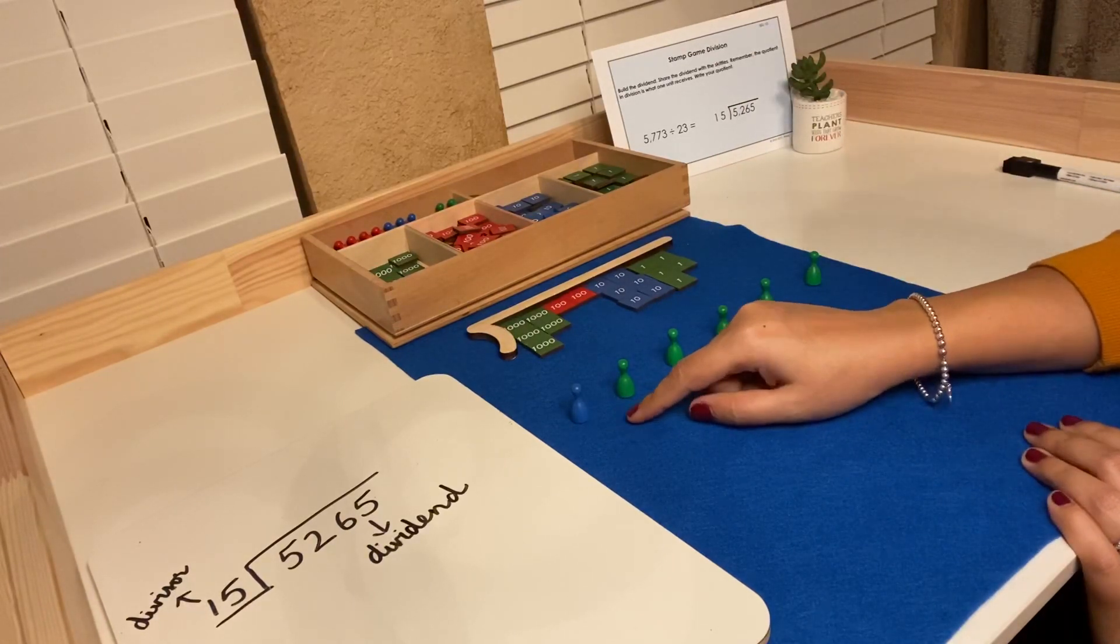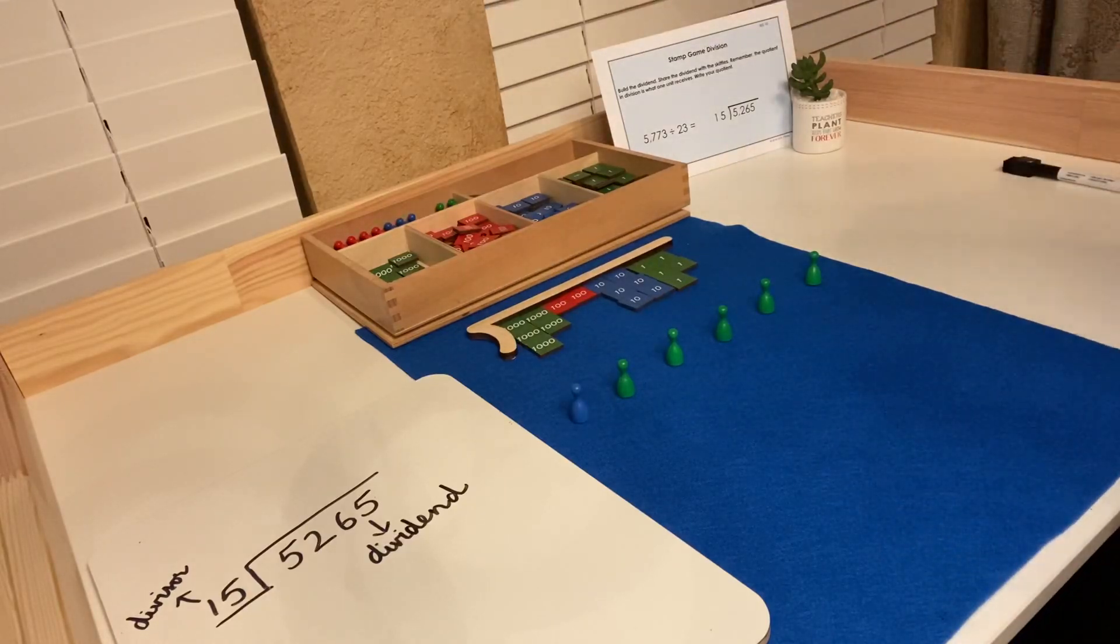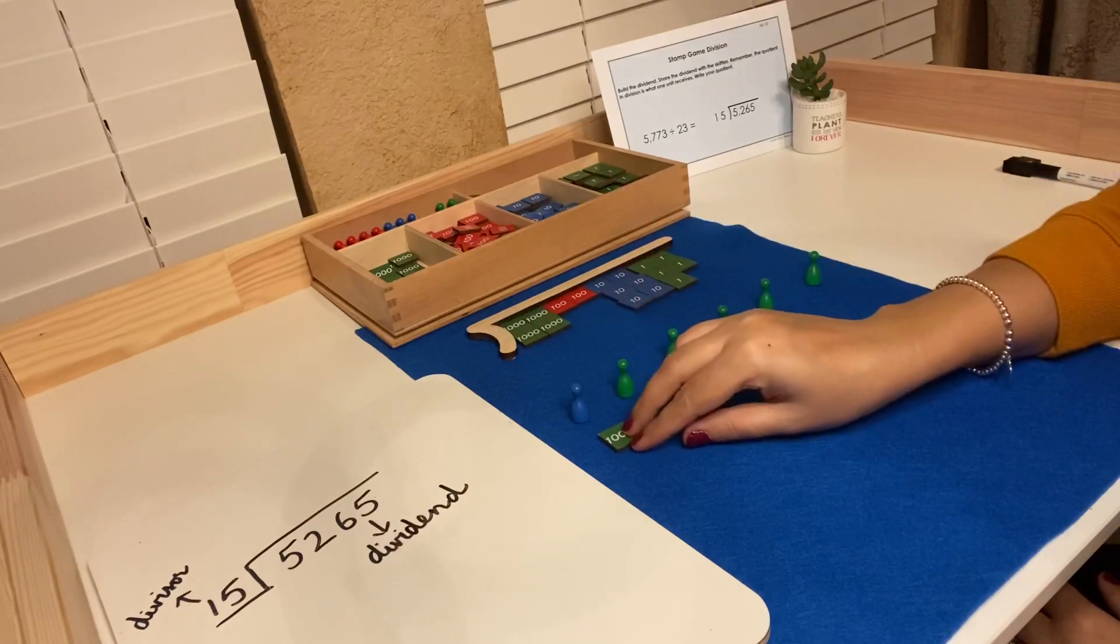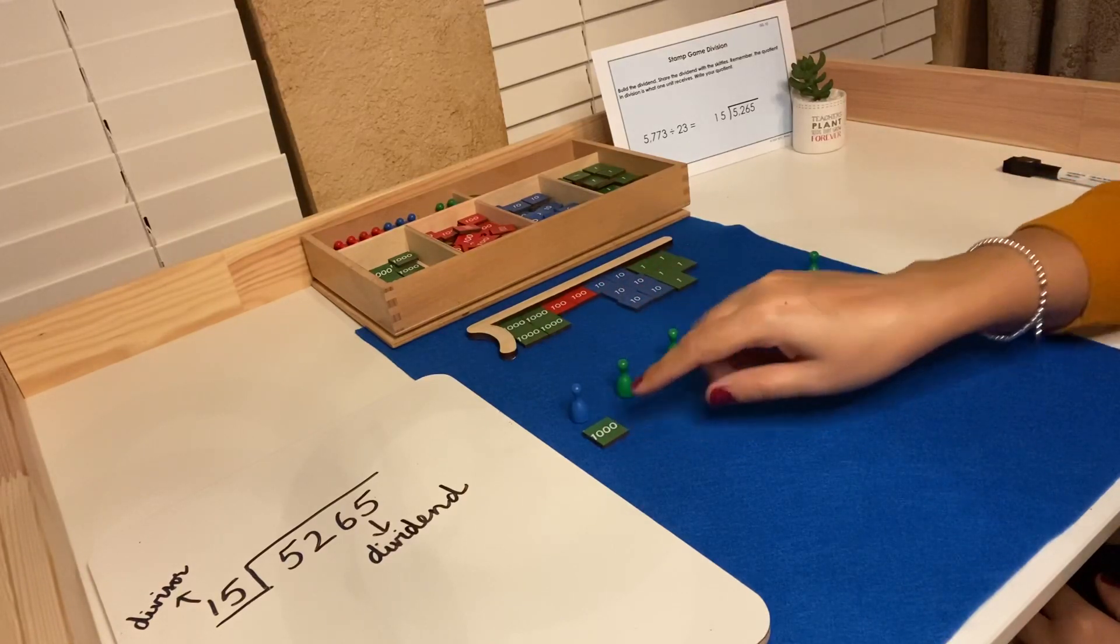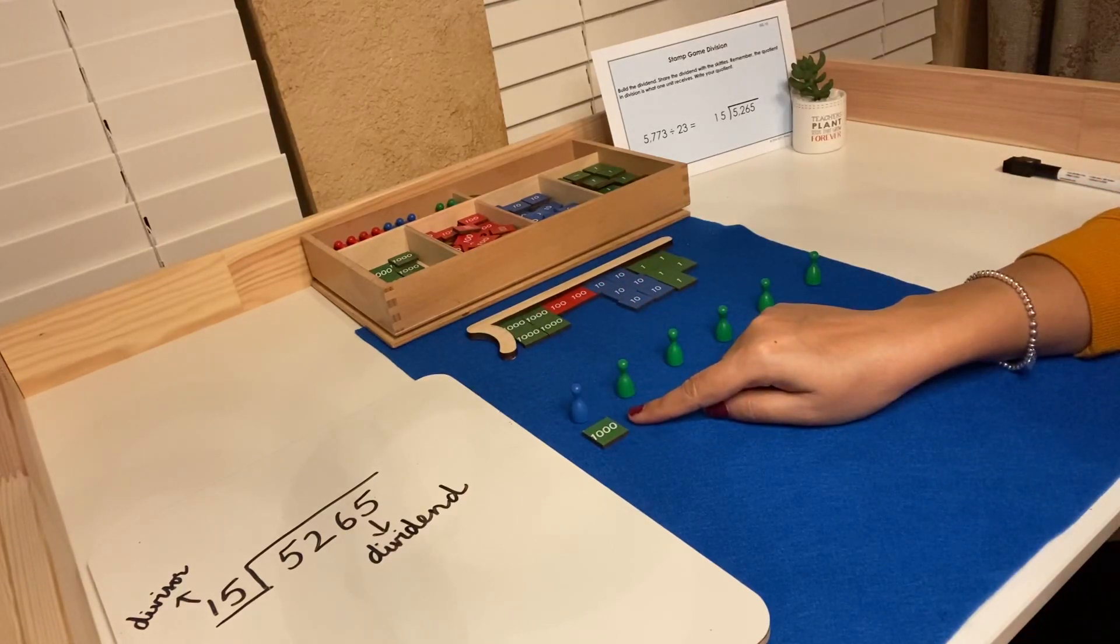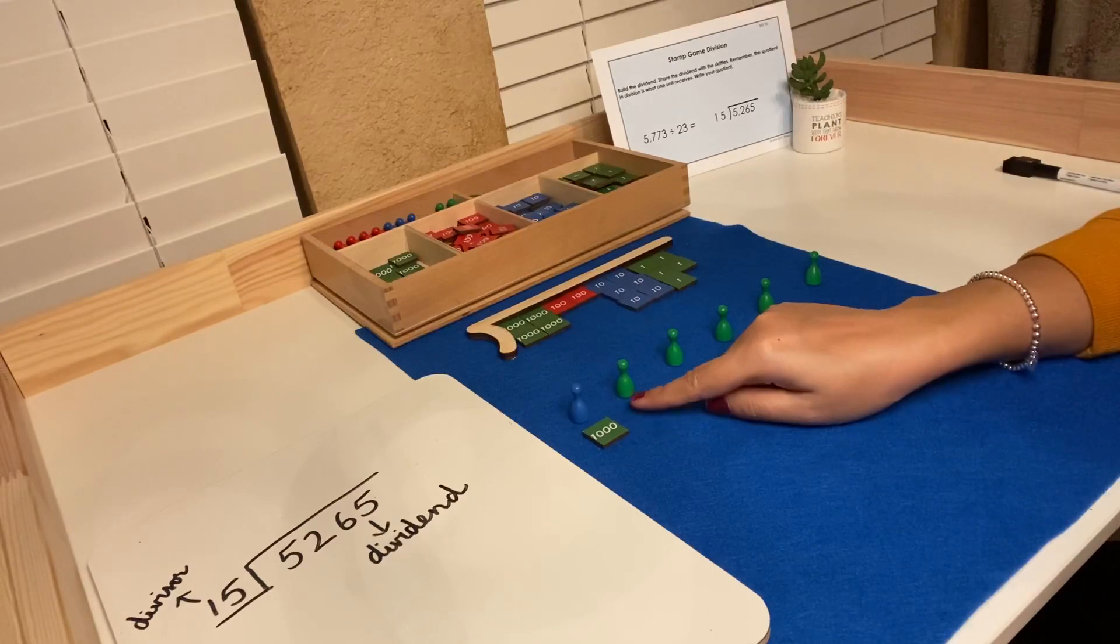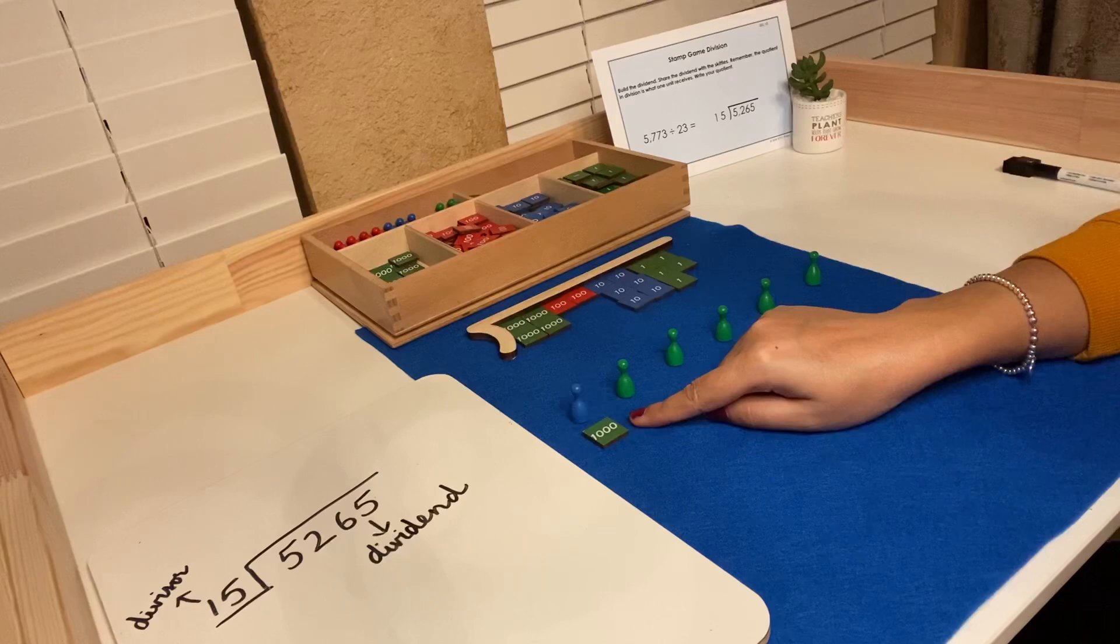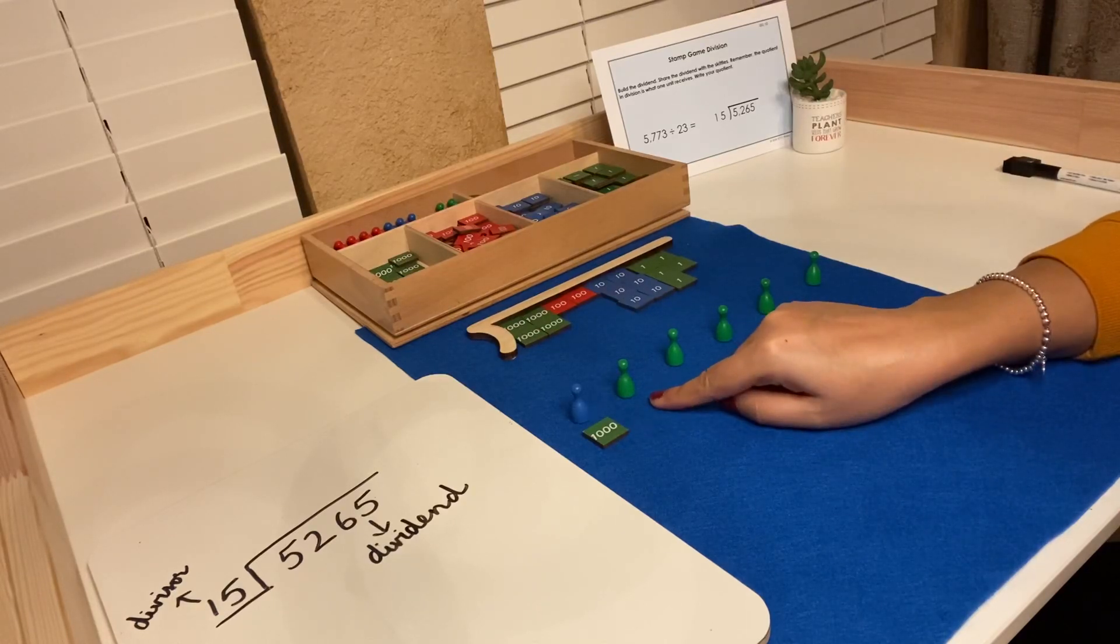In division, we always begin with the highest quantity, in this case, the thousand. We know that the tens are ten times more than a unit, so the tens will receive ten times more than the unit.